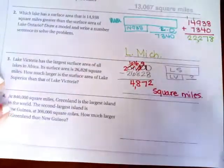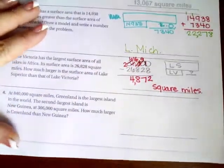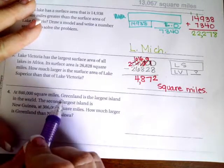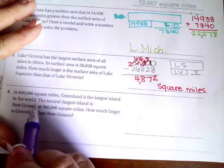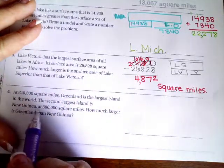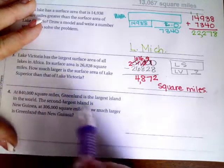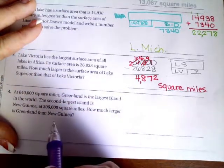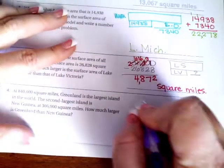So 4,872 square miles. All right, so I'm going to help you guys set up your grid for the next one but then you guys are going to do it. It says at 840,000 square miles, Greenland is the largest island in the world. The second largest island is New Guinea at 306,000 square miles. How much larger is Greenland than New Guinea?